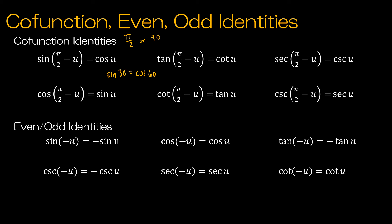Lastly we have the even and odd identities. An even function means it can be folded across the y-axis. Cosine is even, so if I replace u with negative u I get the same value, and the same goes for secant and cotangent. The odd functions — if I replace u with negative u, it negates the function. The sine curve, for example, is symmetric with respect to the origin.